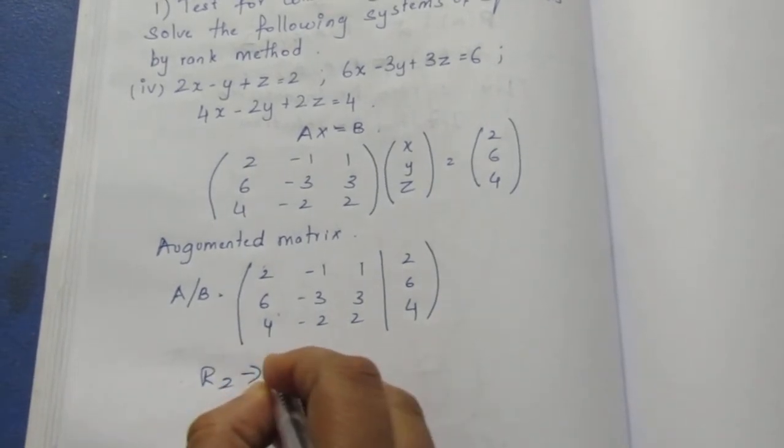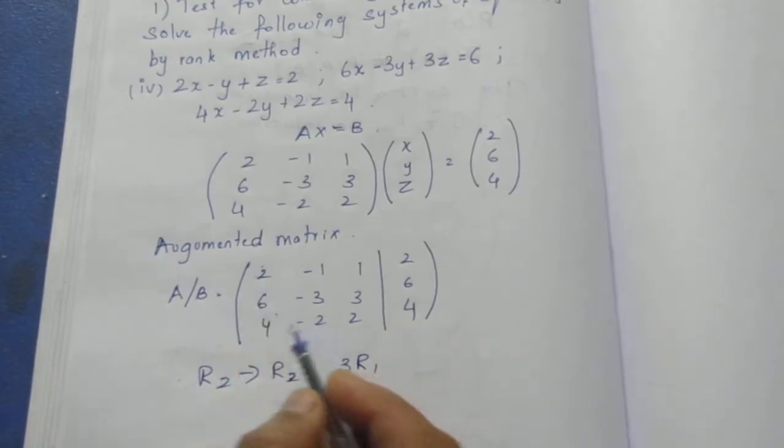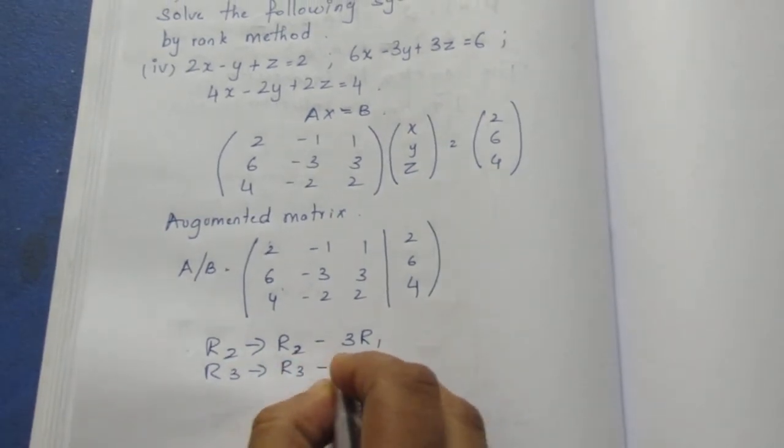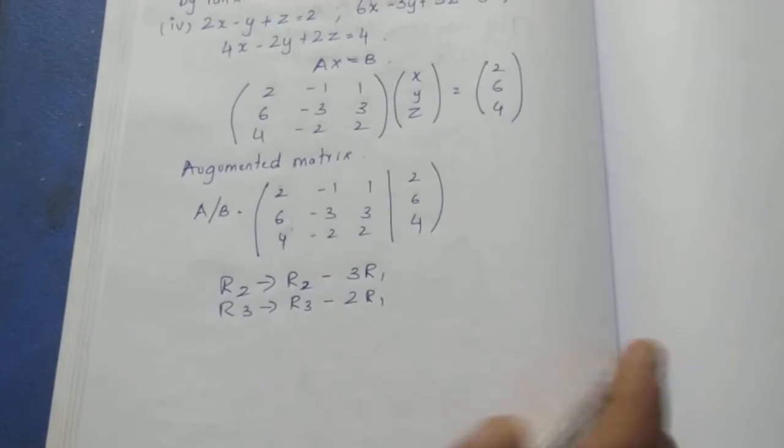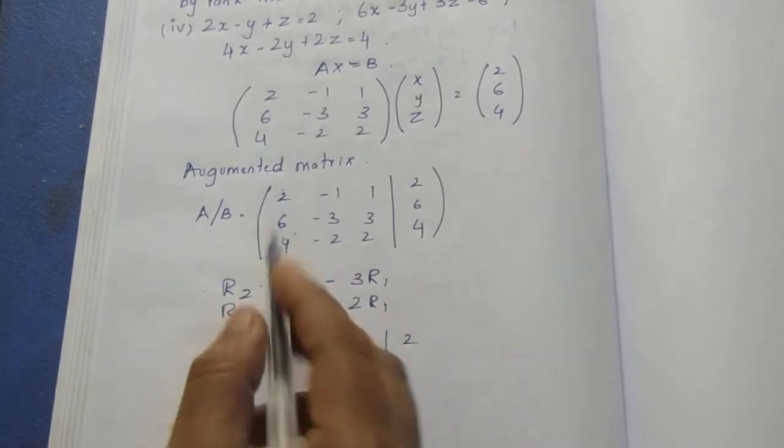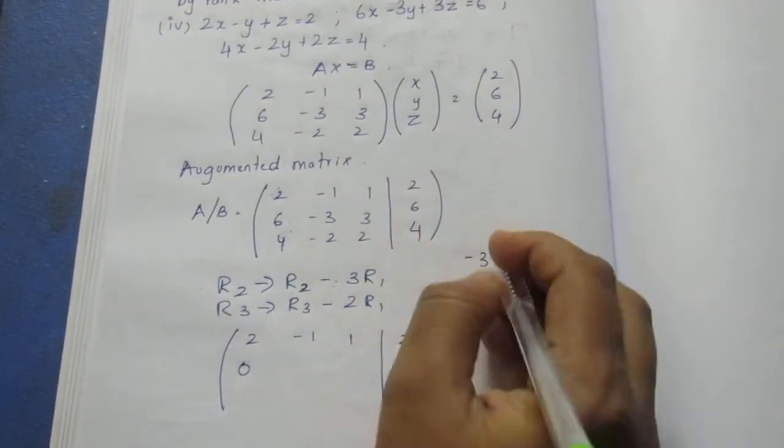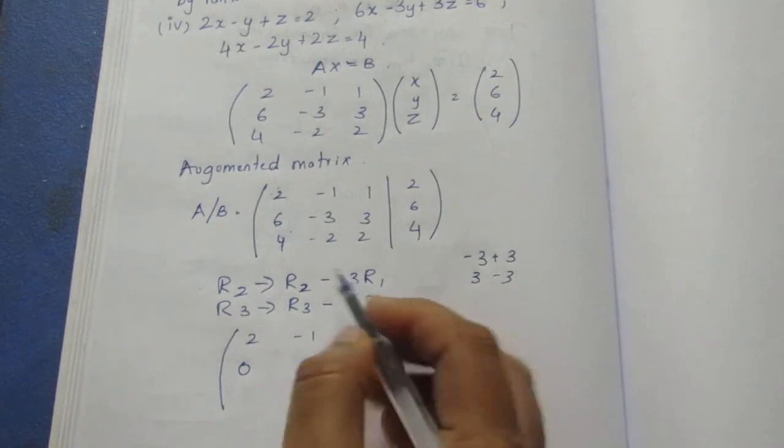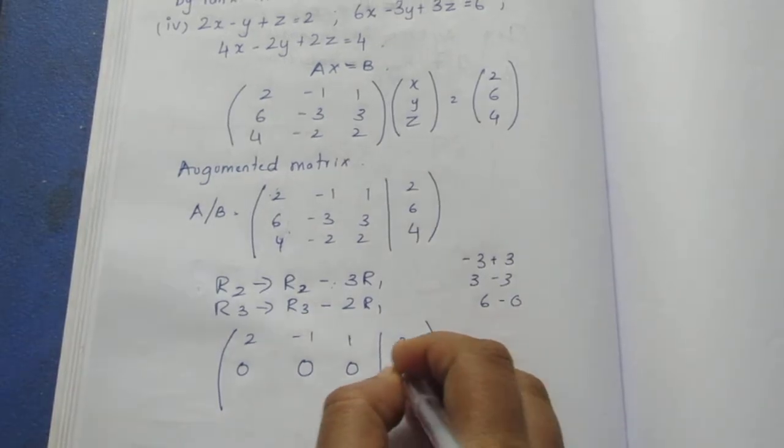R2 becomes R2 minus 3 into R1. 6 minus 6 is 0. Minus 3, minus of minus plus 3 is 0. 3 minus 3 is 0. And 6 minus 3 is 0.